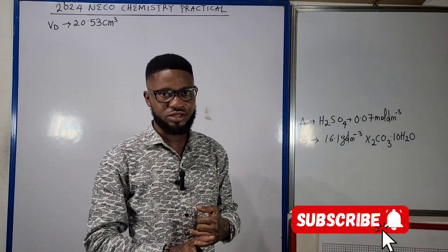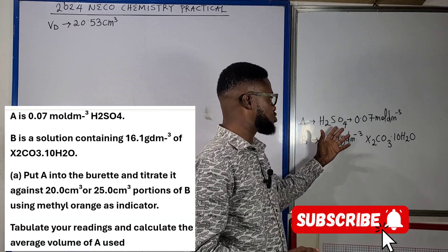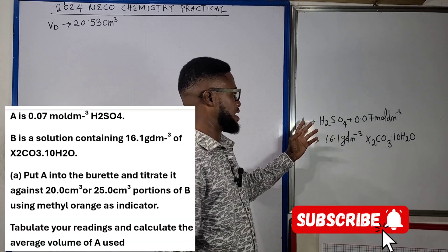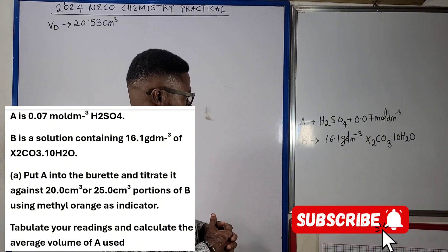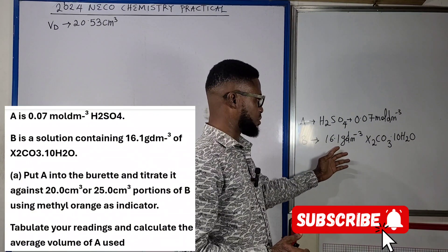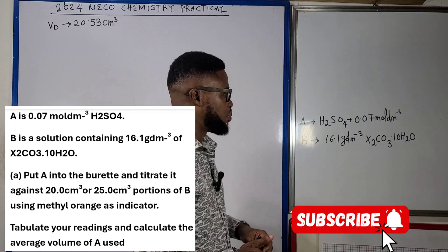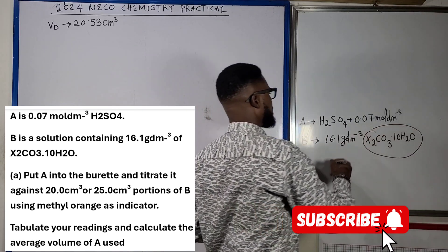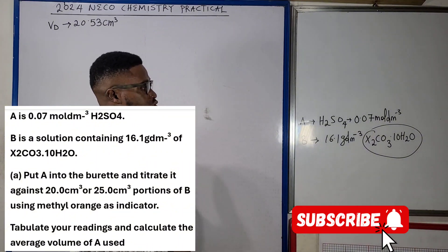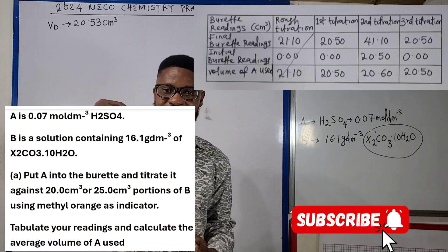We were given A as H2SO4 with concentration of 0.07 mole per dm³. B we were given as 16.1 gram per dm³, which means we were given the mass concentration here, but the carbonate is in the form of X2CO3.10H2O.